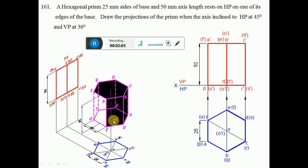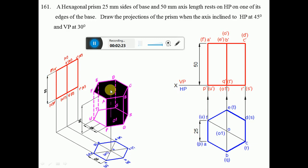Identify the center of the prism and mark that point O and O1. When you look from the top view, O-O1 is the axis; it becomes a point because the axis is perpendicular to HP and parallel to VP, so you get a point in the HP. O is near to the observer so it is visible, and O1 is away from the observer so it becomes invisible. When you look from the front view, you can see the height of the prism, which is equal to 50 mm.